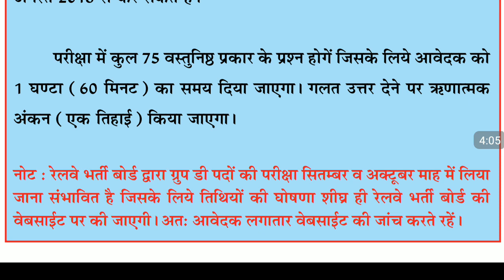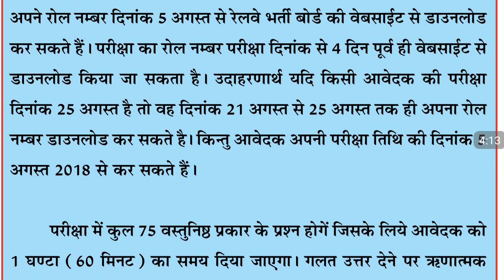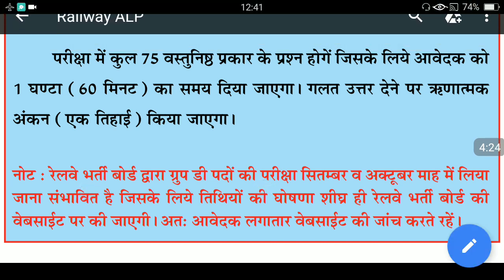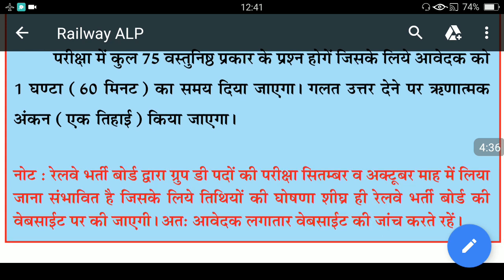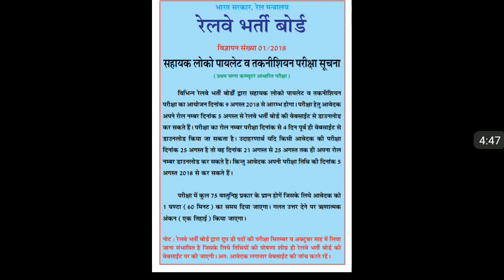The exam dates are from 9th August onwards, and other subjects remain the same. If you have an exam date of 25th, you can download your roll number accordingly. Also note that the Railway Board Group D exam is scheduled in September and October.